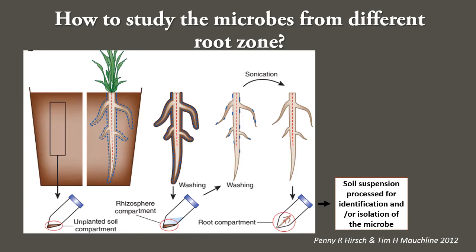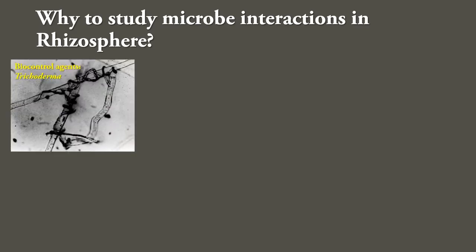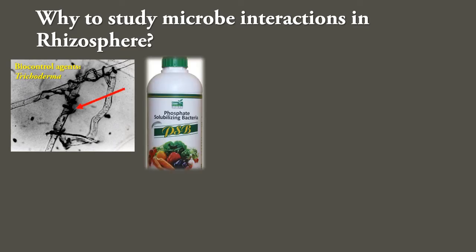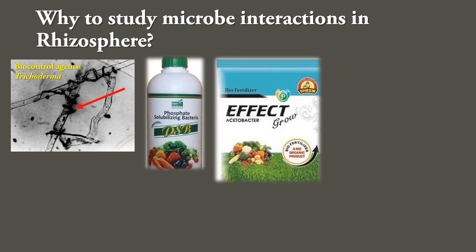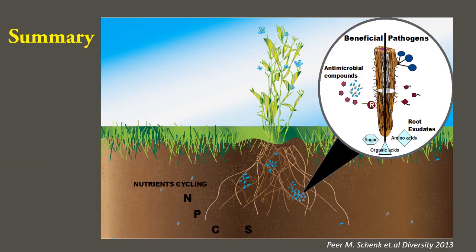Finally, a comparative study is performed to identify microbes unique to each zone. Why study microbe interactions in the rhizosphere? Studies in this area have led to the identification and development of microbial consortia to boost agricultural yield. Examples include development of biocontrol agents like Trichoderma, phosphate-solubilizing bacteria, biofertilizers, vesicular-arbuscular mycorrhiza, and waste decomposers.